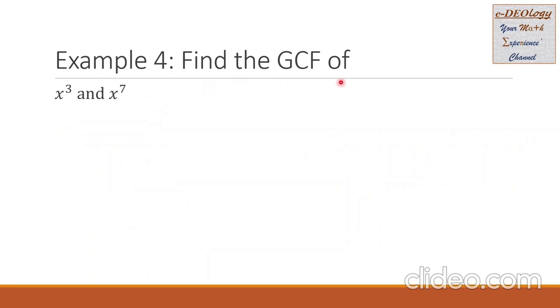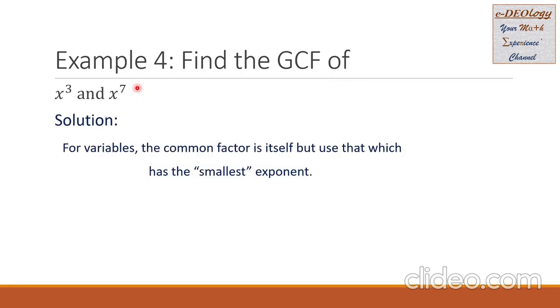Example 4: find the GCF of x cubed and x raised to the 7th power. For variables, the common factor is itself but use the one which has the smallest exponent. So for x, our GCF is equal to x raised to power 3. This is the final answer.